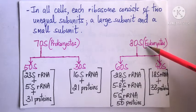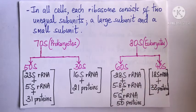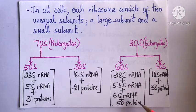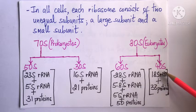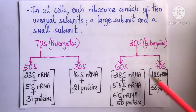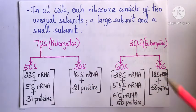In the same way, the eukaryotic 80S ribosome consists of a larger 60S subunit and a smaller 40S subunit. The larger 60S subunit is made up of 28S rRNA, which is 4,700 nucleotides long, 5.8S rRNA, which is 160 nucleotides long, and 5S rRNA, which is 120 nucleotides long, along with 50 proteins. The smaller 40S subunit contains 18S rRNA, which is 1,900 nucleotides long, along with 33 proteins. Such differences are responsible for the unequal size of ribosomal subunits.